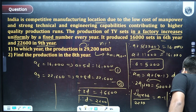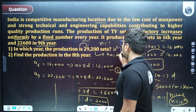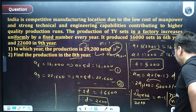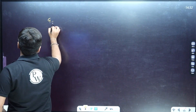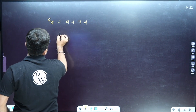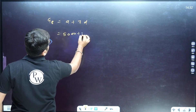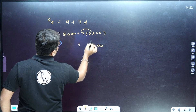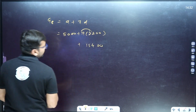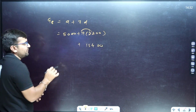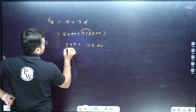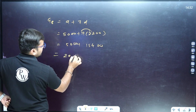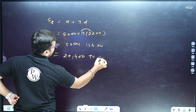Now find the production in the eighth year: a8 = a + 7d = 5,000 + 7 × 2,200 = 5,000 + 15,400 = 20,400. So the production of TV sets in the eighth year is 20,400.